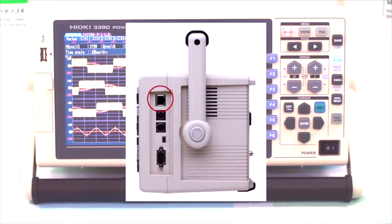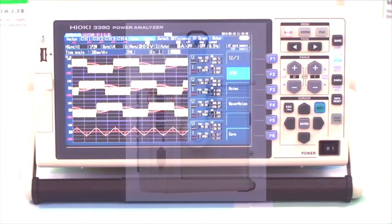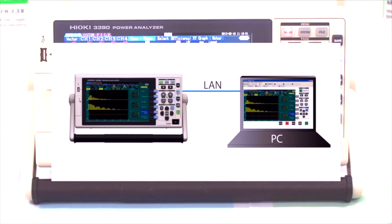The 3390 also provides an Ethernet port and built-in HTTP server so the unit can be accessed and remotely controlled through a PC's web browser.